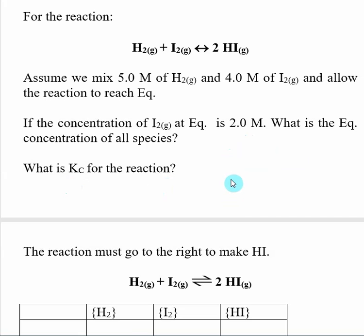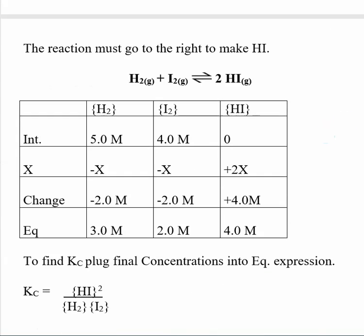Before we start, I know that this reaction is going to go to the right, because I have mixed some initial amounts of H2 and I2, but the initial concentration of HI is 0. So the reaction must go to the right and must make some HI in order for equilibrium to be established. With our ICE table, I put in the initial values given: 5 molar H2, 4 molar I2, and an initial concentration of HI of 0.